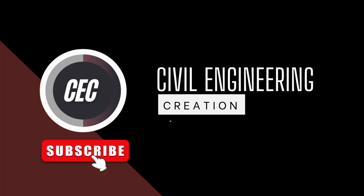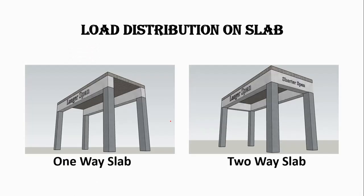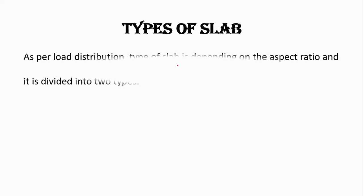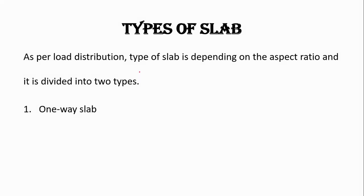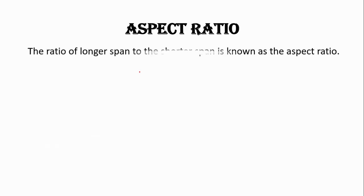Welcome to my YouTube channel Civil Engineering Creation. Our today's topic is load distribution on slab. If we consider the load mechanism, the slab is divided into two types depending on the aspect ratio. Aspect ratio is basically the ratio of the longer span to the shorter span.